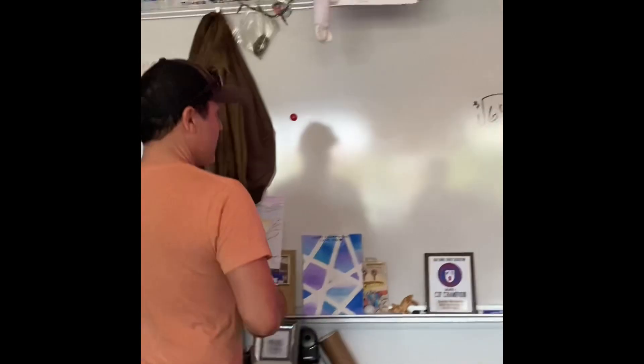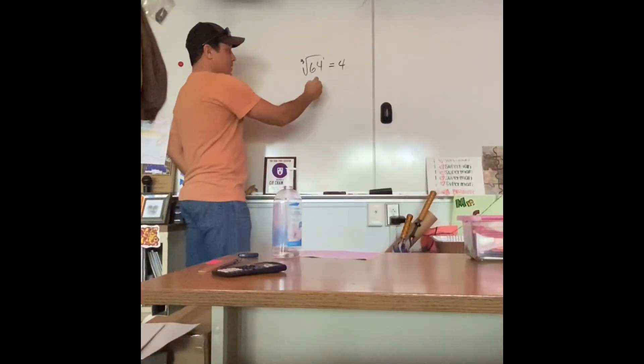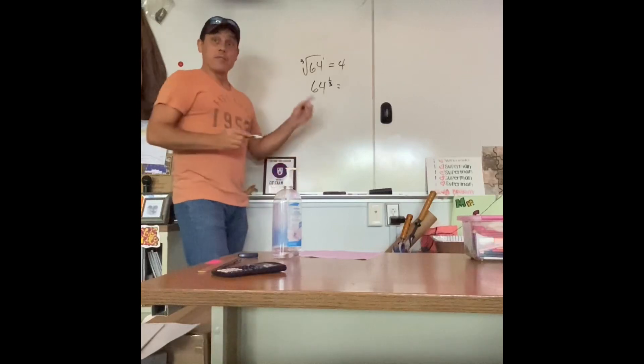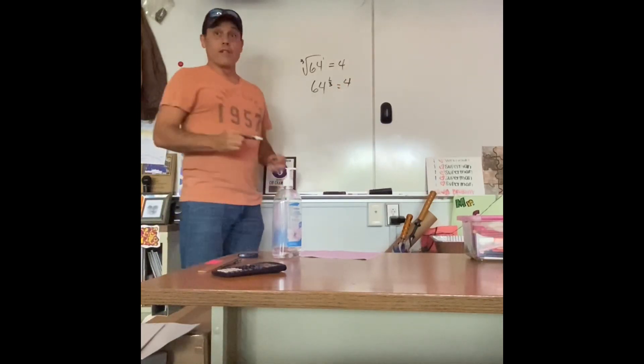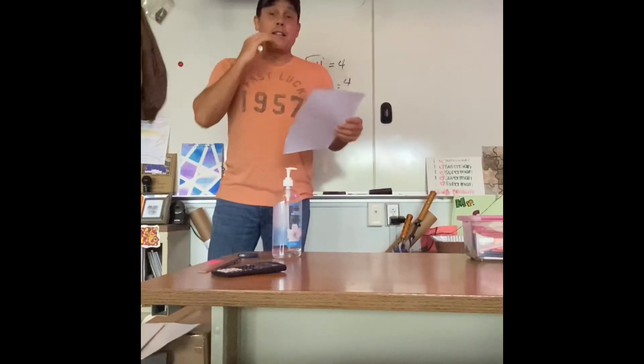So, the cubed root of 64. Well, let's go back. There's really a 1 there. So, it's the big number, the 64 raised to the 1 third. And guess what? If you put 64 to the 1 third in, you get 4. Okay. So, that's basically it in a nutshell.